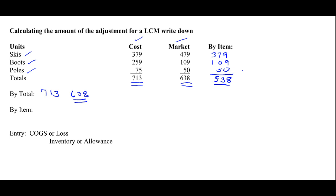By item, you can see that it's a more stringent test of the lower of cost or market adjustment, because you're picking just the lowest price of each item. When you work from totals, some netting of gains and losses can happen, but when you work by item you get strictly the lower amount. Working by item, inventory cost is $713 but inventory market is $538, so it requires a bigger write-down as anticipated.